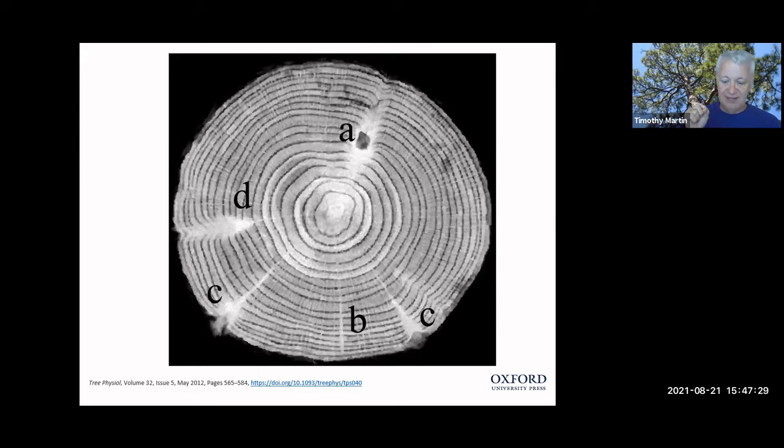Those dormant buds are connected to the pith by a bud trace. So this cross section of this tree stem shows a number of dormant buds that sprouted at some point. And you can see that these dormant buds are all connected to the pith of this tree stem, the center of this tree stem by a bud trace. So they essentially move out as the tree grows in diameter and remain just under the surface of the branch or stem, and they're connected to the pith by a bud trace. So those dormant buds were initially produced by the apical meristem.